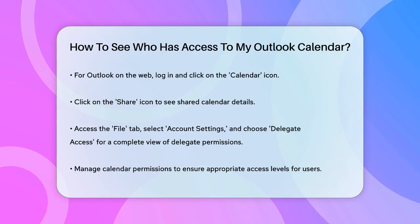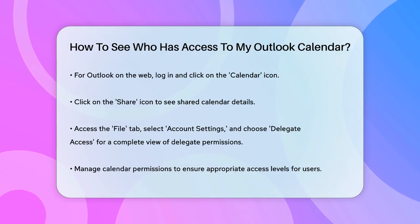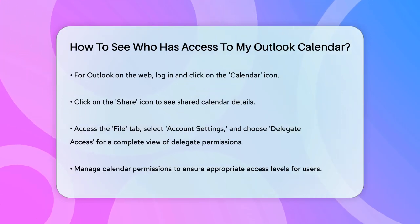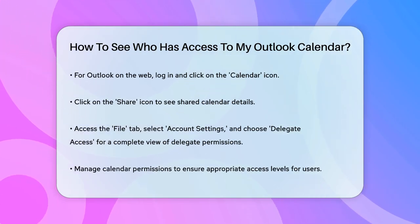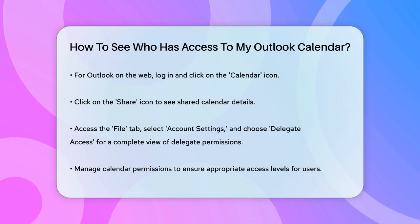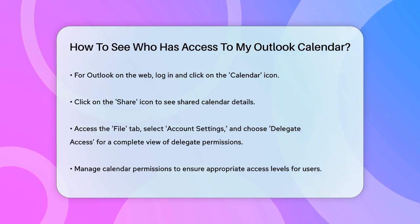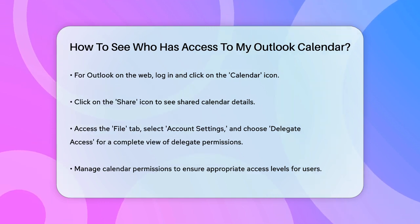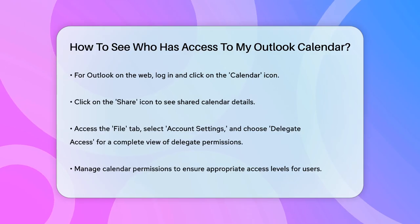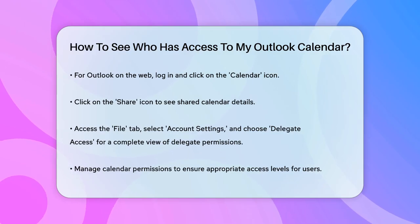By following these steps, you can easily see who has access to your Outlook calendar and what they can do with that access. This helps you manage your calendar permissions effectively and ensure that only the right people have the right level of access.